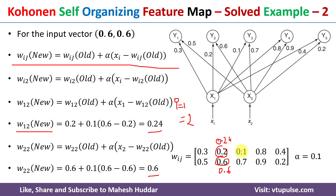Once the old weights are replaced with the new weights, the weight vector becomes 0.24 and 0.6 for the second cluster. This is the new weight vector after assigning the second input vector to one of the clusters. In this video we discussed how to calculate the square of Euclidean distance for an input vector, how to assign the input vector to a cluster, and how to update the weights associated with that cluster. I hope the concept of Kohonen Self-Organizing Feature Map is clear. If you like the video, please like, share, subscribe, and press the bell icon for regular updates.